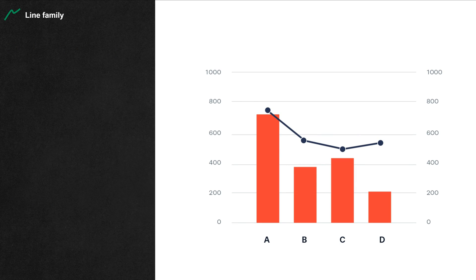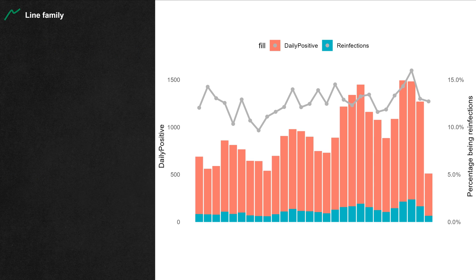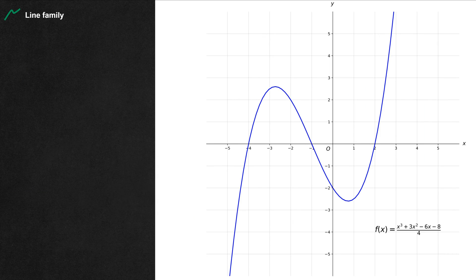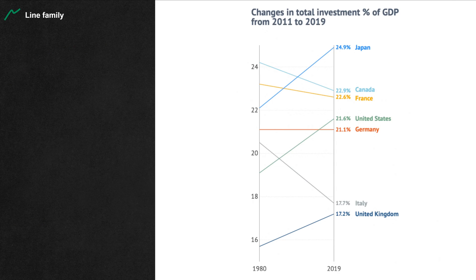When a line chart is used together with a traditional bar or column chart, we have a Pareto chart. If people need a separate and independent axis to represent the line in a Pareto chart, we have the dual axis chart. To demonstrate a mathematical equation, a series of points whose coordinates satisfy the equation form a line — this is the function plot.